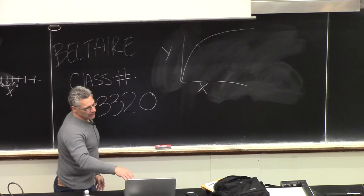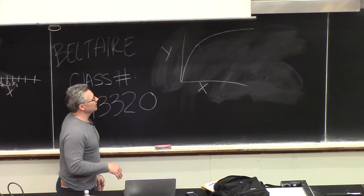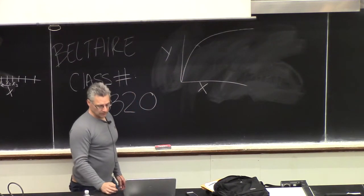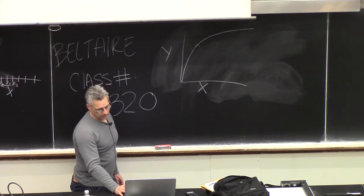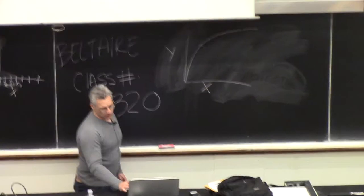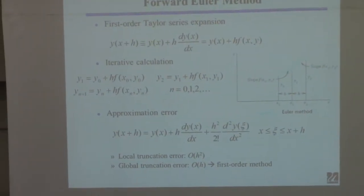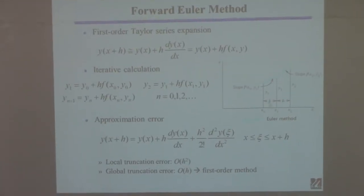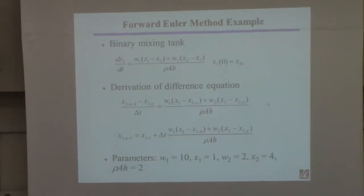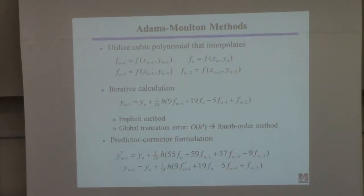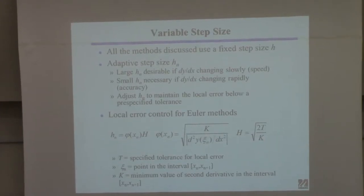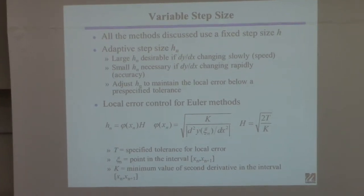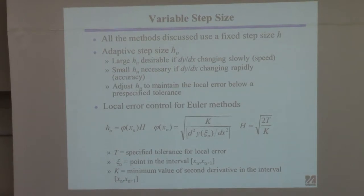The key idea is that if the solution is changing rapidly, you need a small step size. You might recall interpreting the Euler method as finding the slope — if the true solution is changing very rapidly, you'll want a very small h to get a good approximation. But over here where the solution changes slowly, you don't need a small h; you can use a large h.